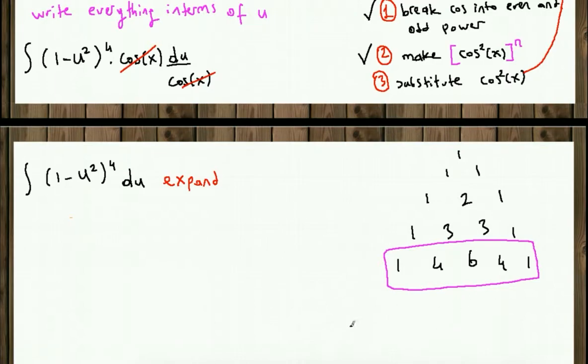Now let's write the coefficients first. So those are the coefficients: 1, 4, 6, 4, and 1. And since our sign is negative sign in between, we start with positive, negative, positive, negative, positive. Now our first term is 1. This is our first term. And u to the second is our second term. So let's copy-paste first and second term as it is.